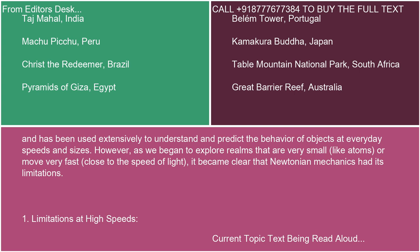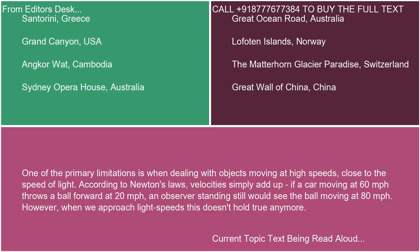One: limitations at high speeds. One of the primary limitations is when dealing with objects moving at high speeds, close to the speed of light. According to Newton's laws, velocities simply add up. If a car moving at 60 miles per hour throws a ball forward at 20 miles per hour, an observer standing still would see the ball moving at 80 miles per hour. However, when we approach light speeds, this doesn't hold true anymore.